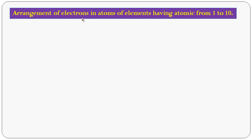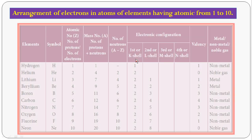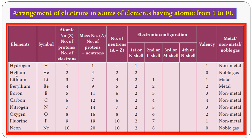Now let's look at the arrangement of electrons in atoms of elements having atomic number 1 to 10. These elements are given with their symbols, atomic numbers, and mass numbers. For example, beryllium has symbol Be, atomic number 4, and mass number 9. Number of neutrons = A minus Z = 9 minus 4 = 5. The electronic configuration is 2, 2 — first shell 2 electrons, next shell 2 electrons. So it has valence 2 and beryllium is a metal.